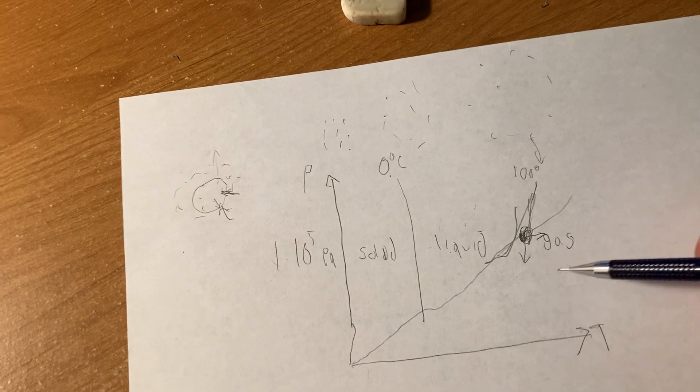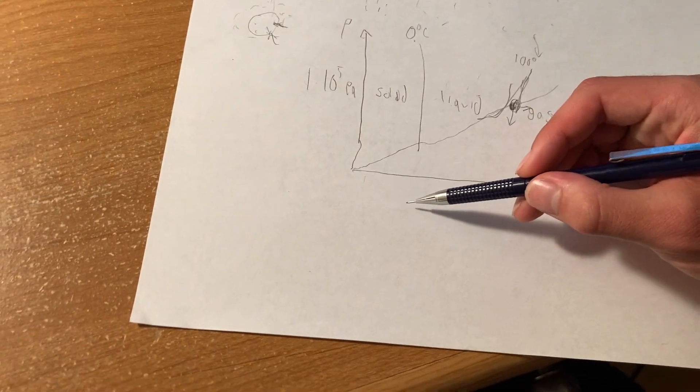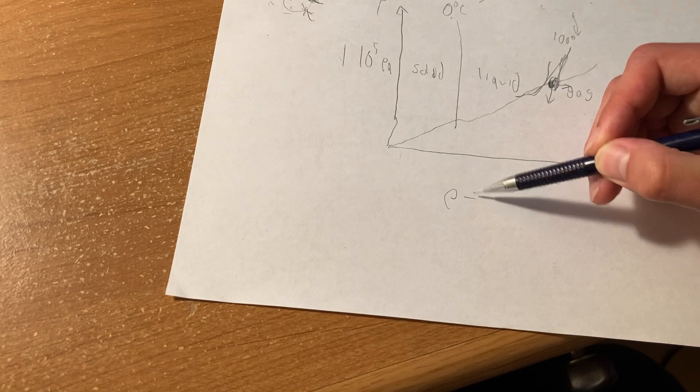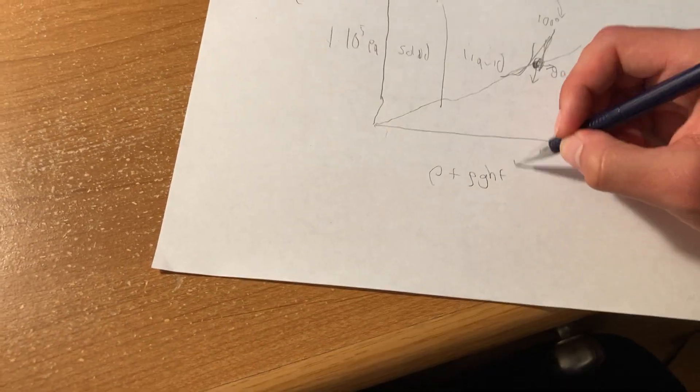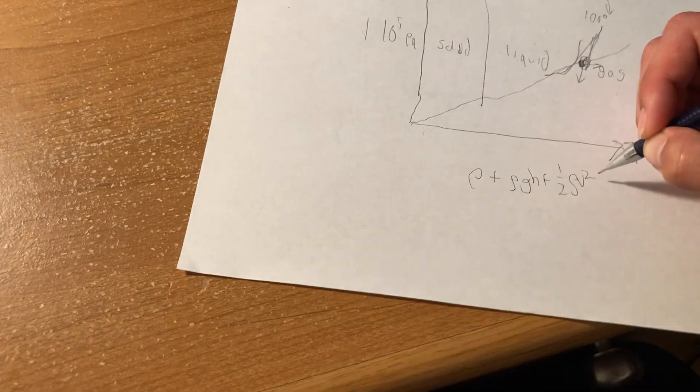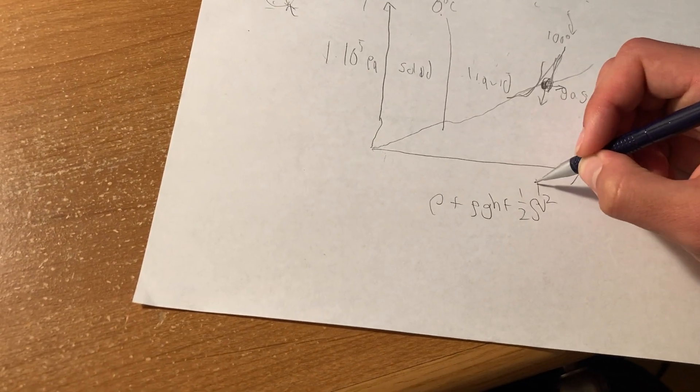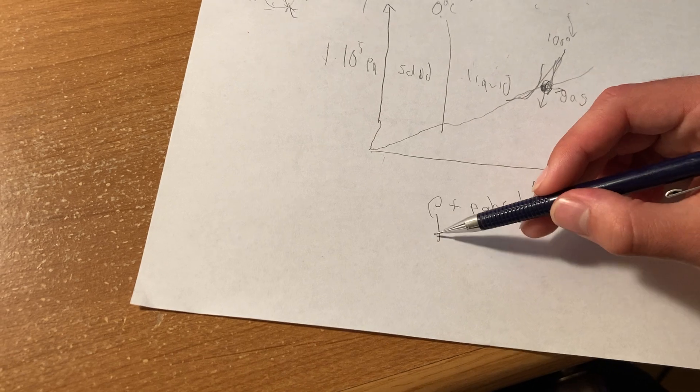So how can you do that? Well, if you know about the Bernoulli equation, then you know that P plus rho gh plus one-half rho v squared is constant. So that means if the velocity goes higher, that means the pressure has to go down.